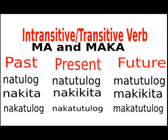Transitive verbs using ma. Note that there is no imperative form for a transitive ma verb. Example: kita. Infinitive: makita. Imperative: none. Past: nakita. Present: nakikita. Future: makikita.